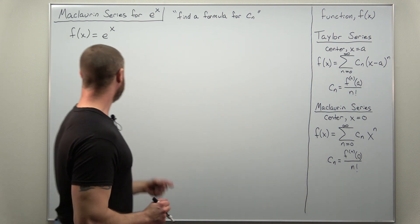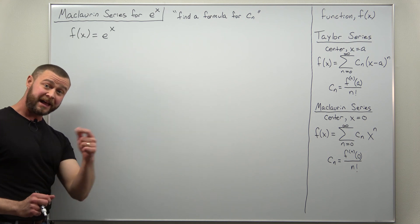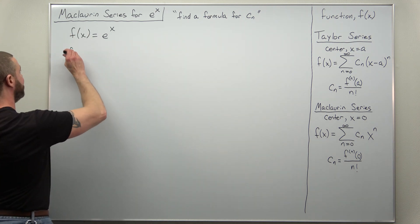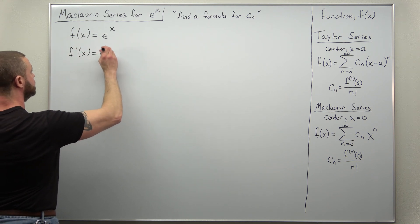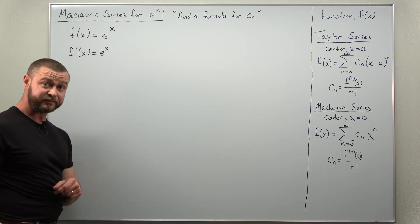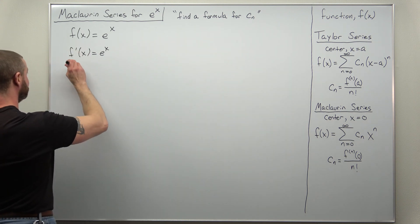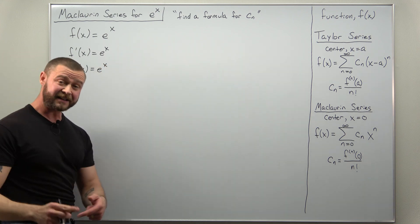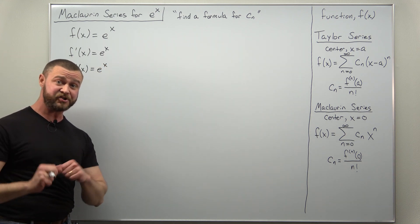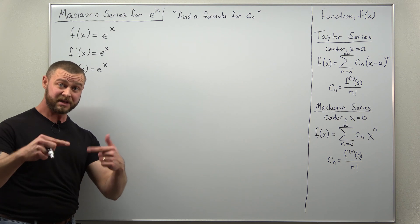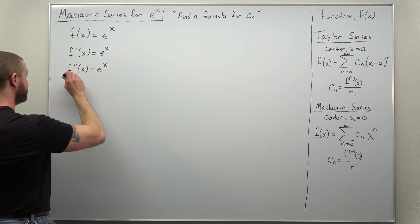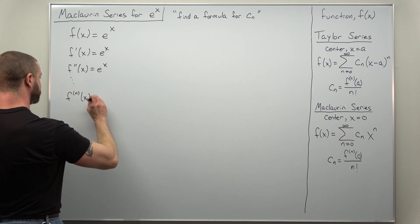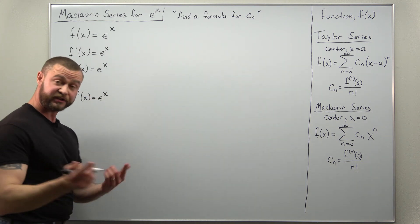So let's start with our function here, f of x as e to the x, and calculating the derivatives is going to be really simple. Our first derivative f prime is e to the x, the second derivative is going to be e to the x, and in fact it doesn't matter how many times we differentiate e to the x, the derivative will be e to the x. So we can get a nice pattern here for the nth derivative of e to the x, it's just e to the x.